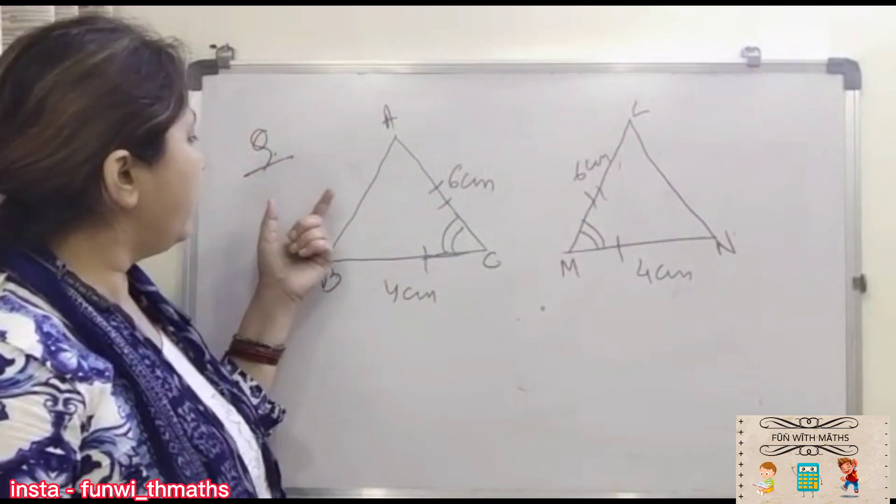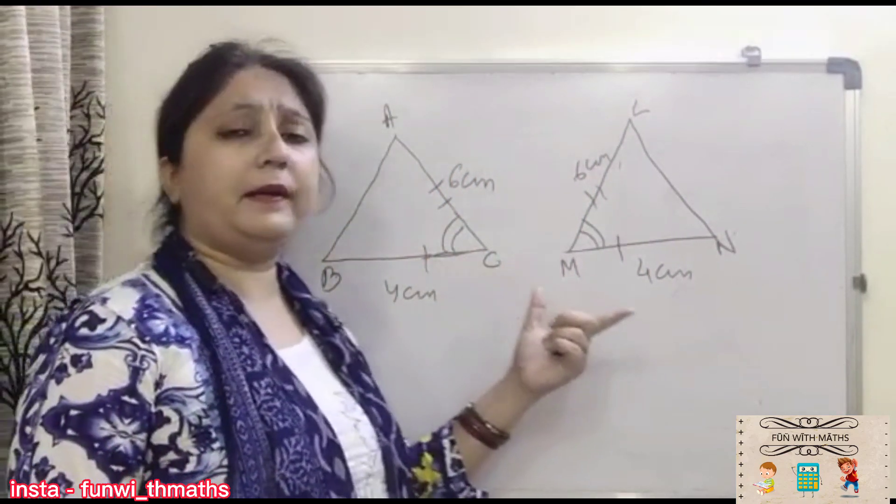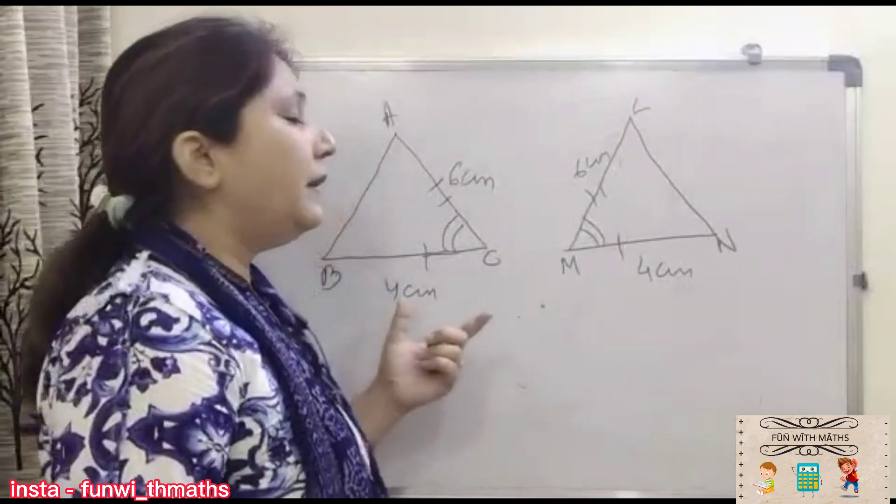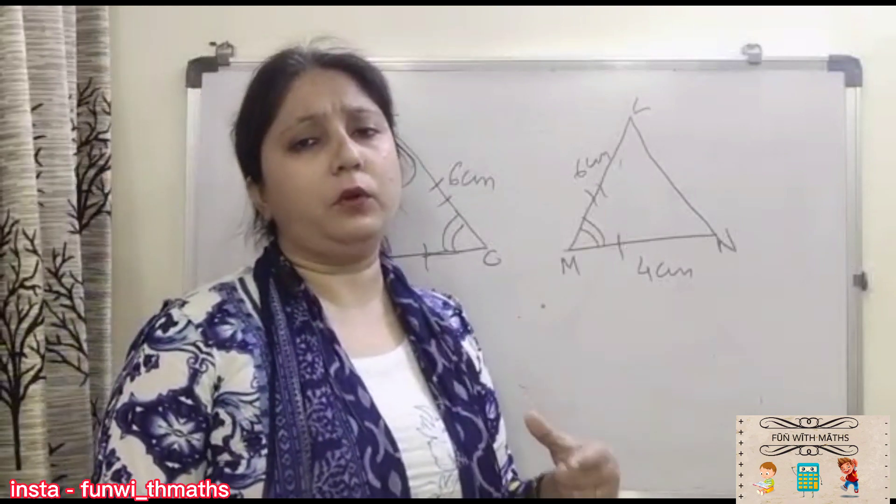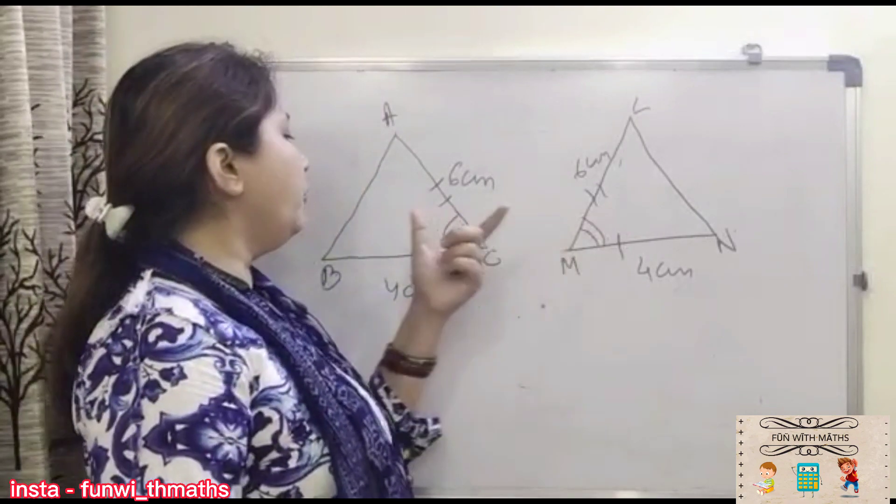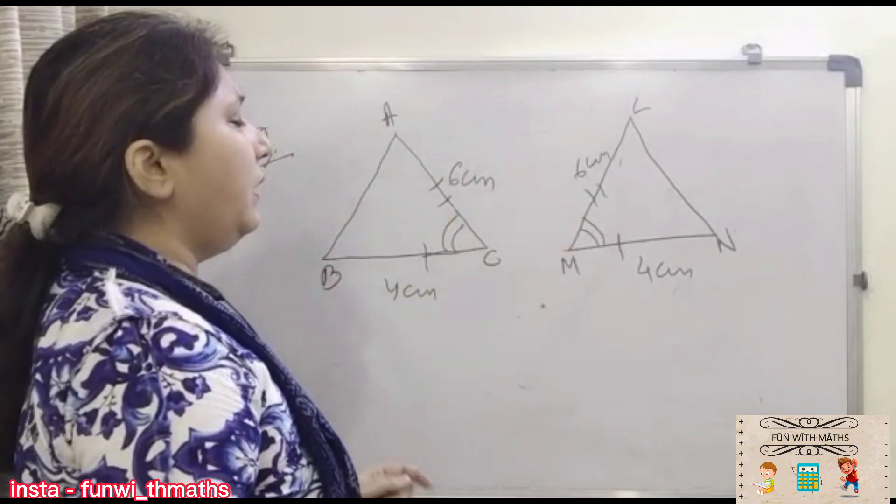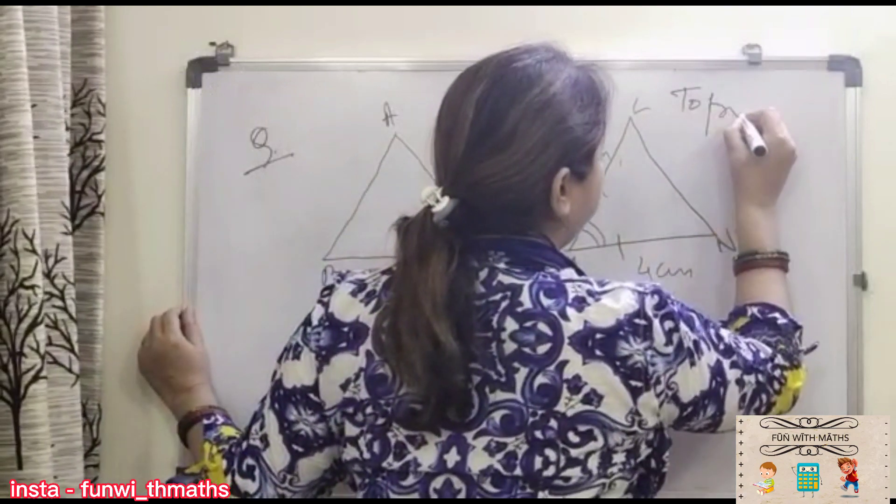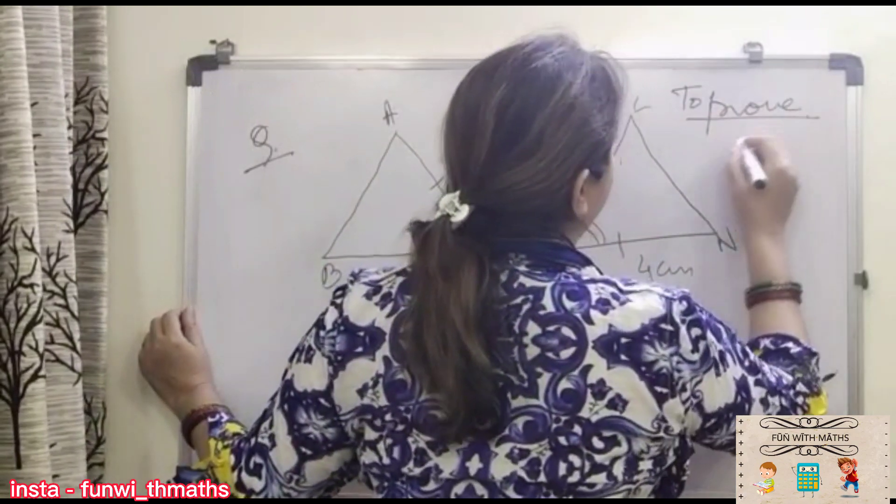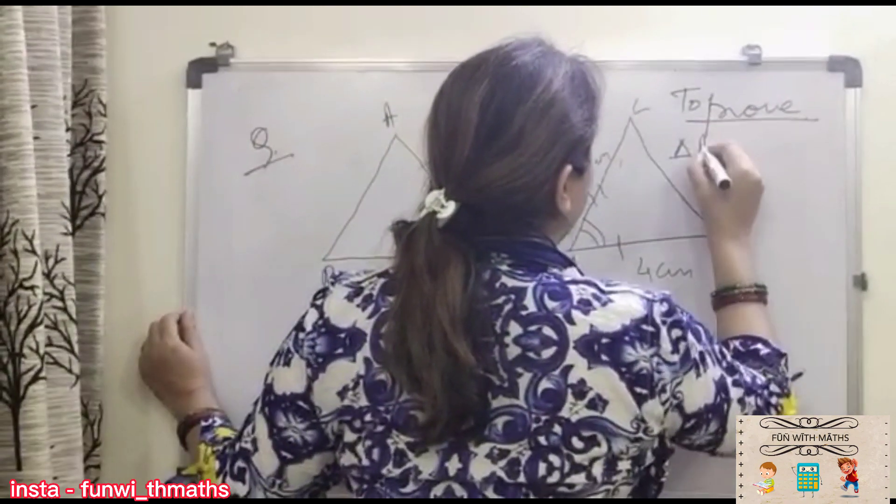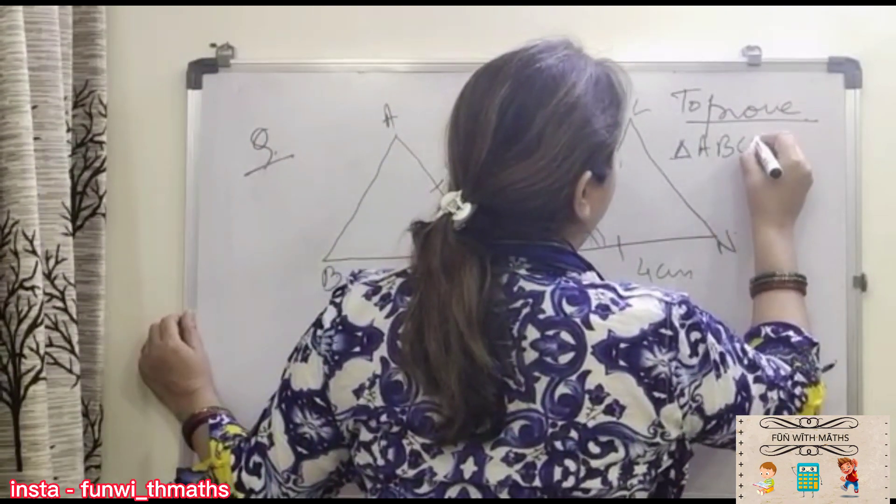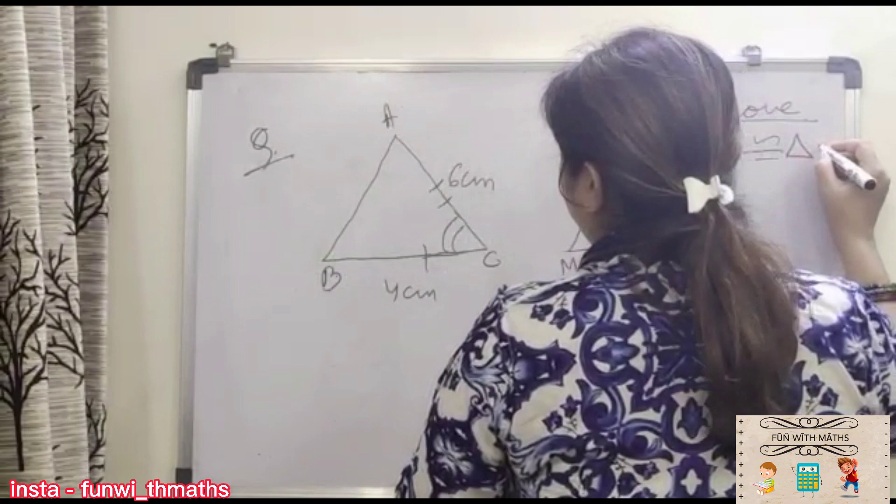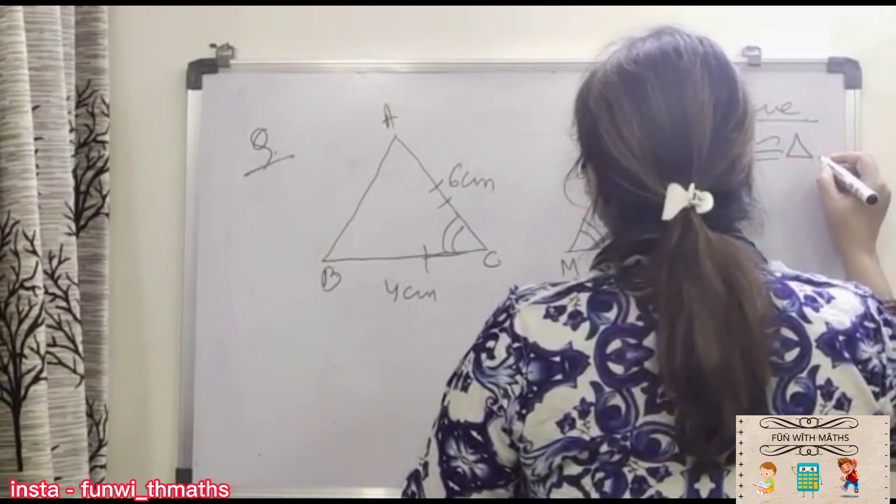Now children, here is a question related to the criteria which we have just done. That two sides and their included angle. Now we have to prove triangle ABC congruent to triangle. What you have to prove? You have to prove triangle ABC congruent to triangle L, M, N.